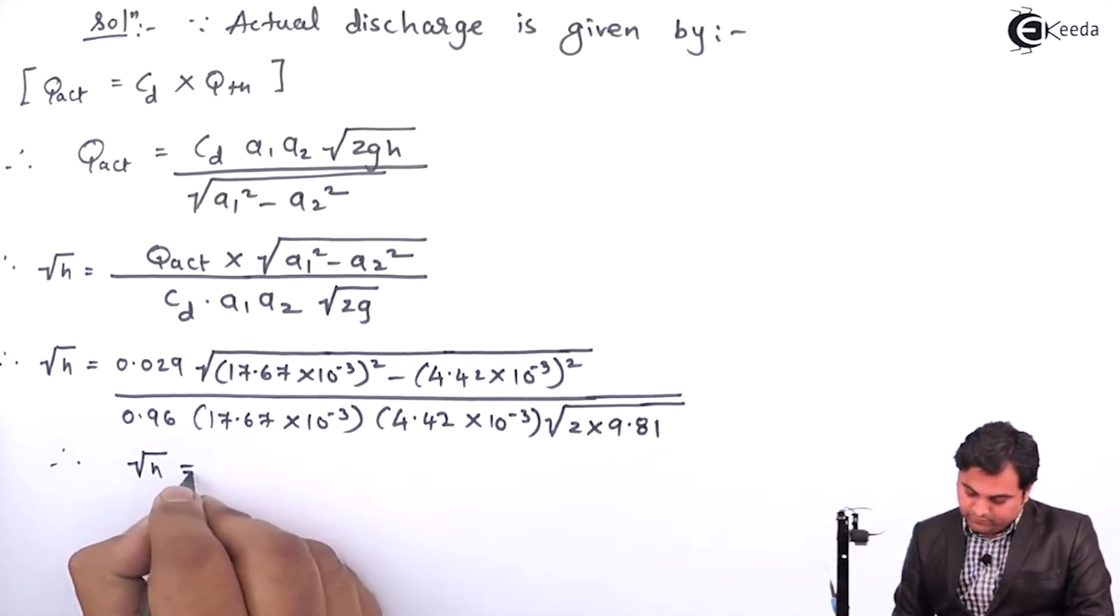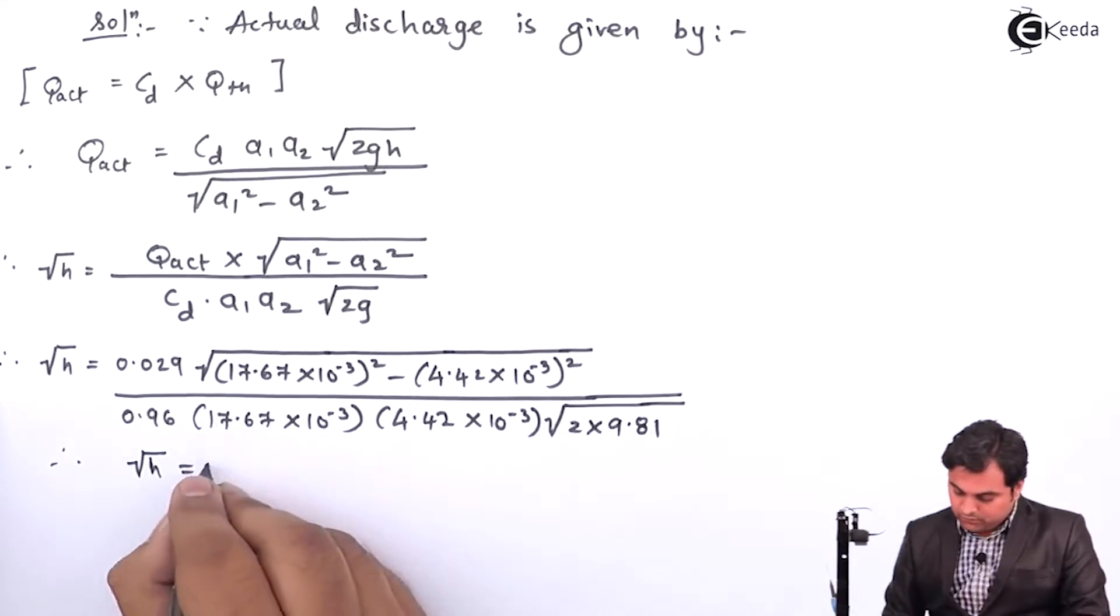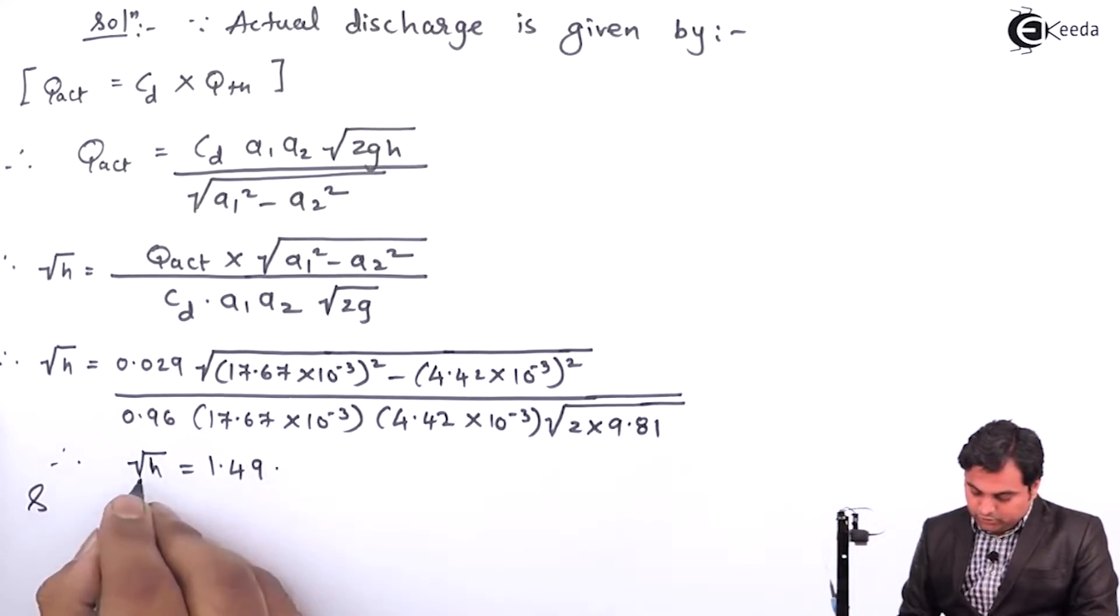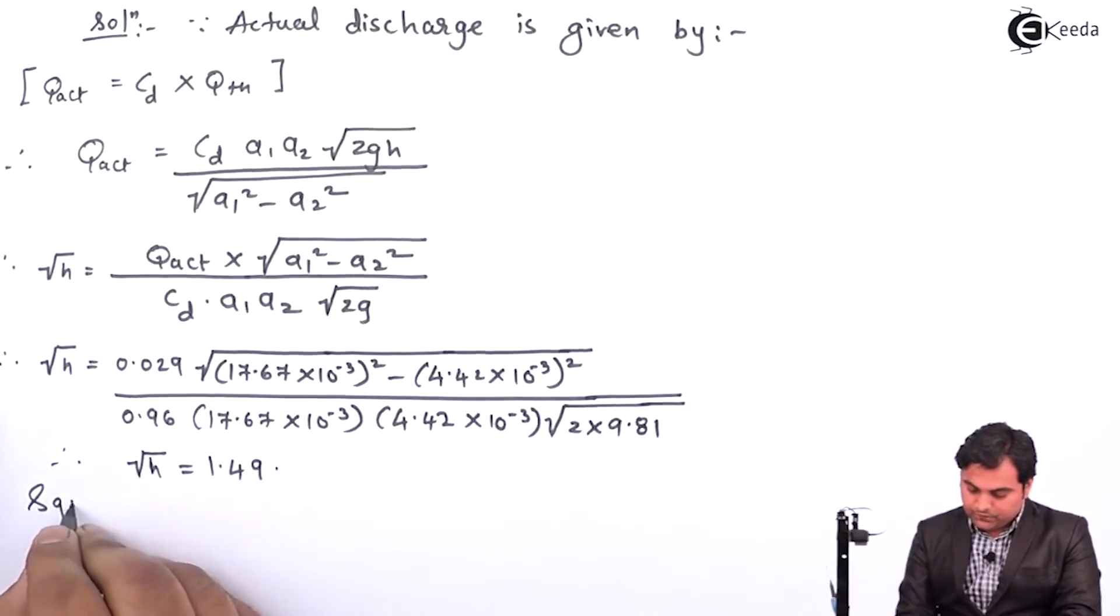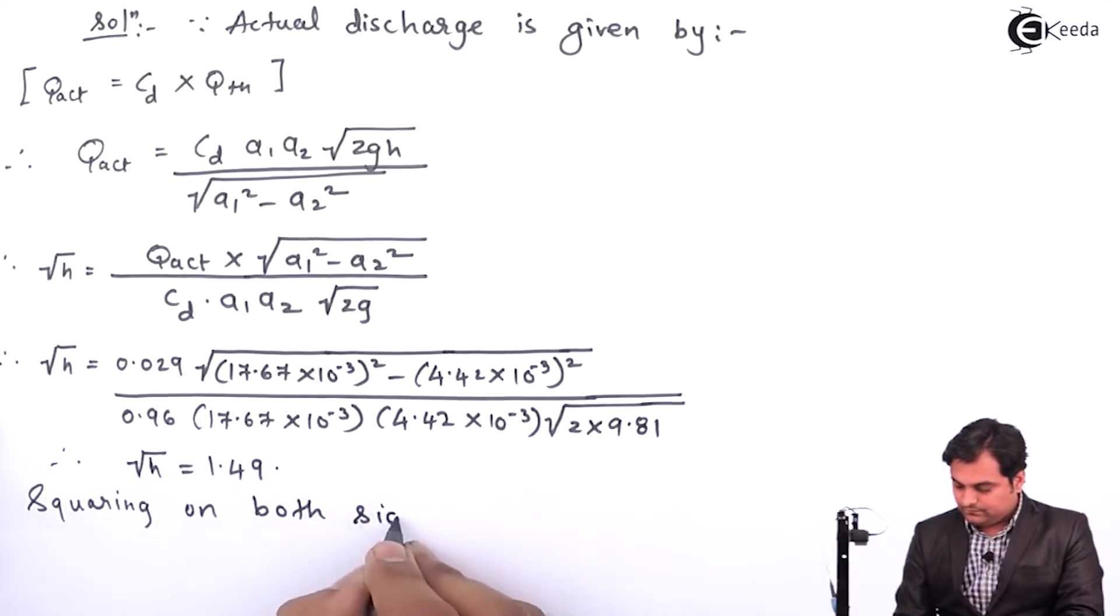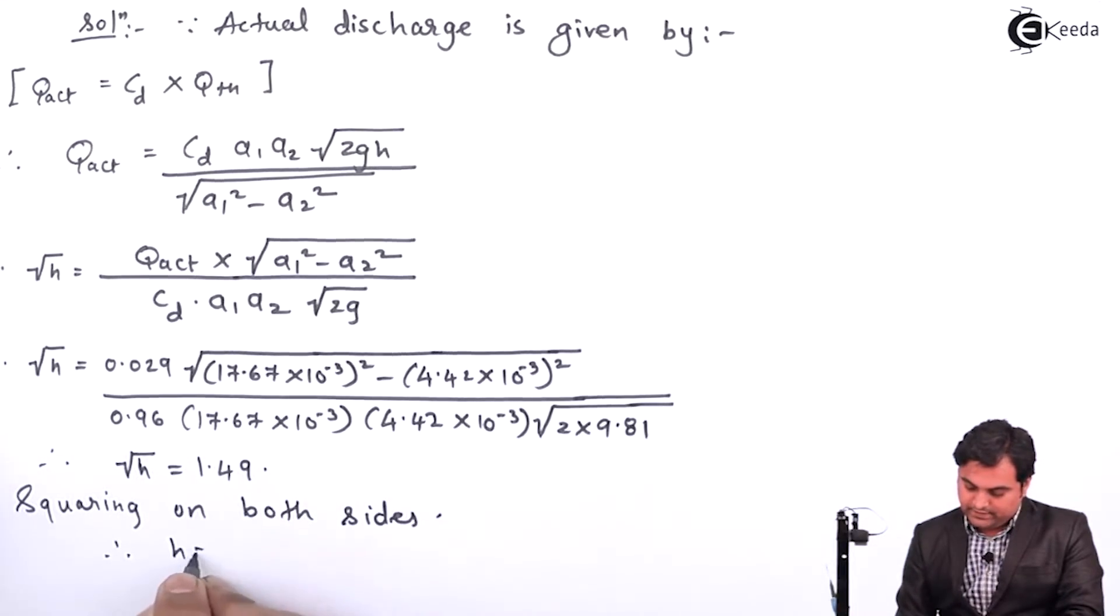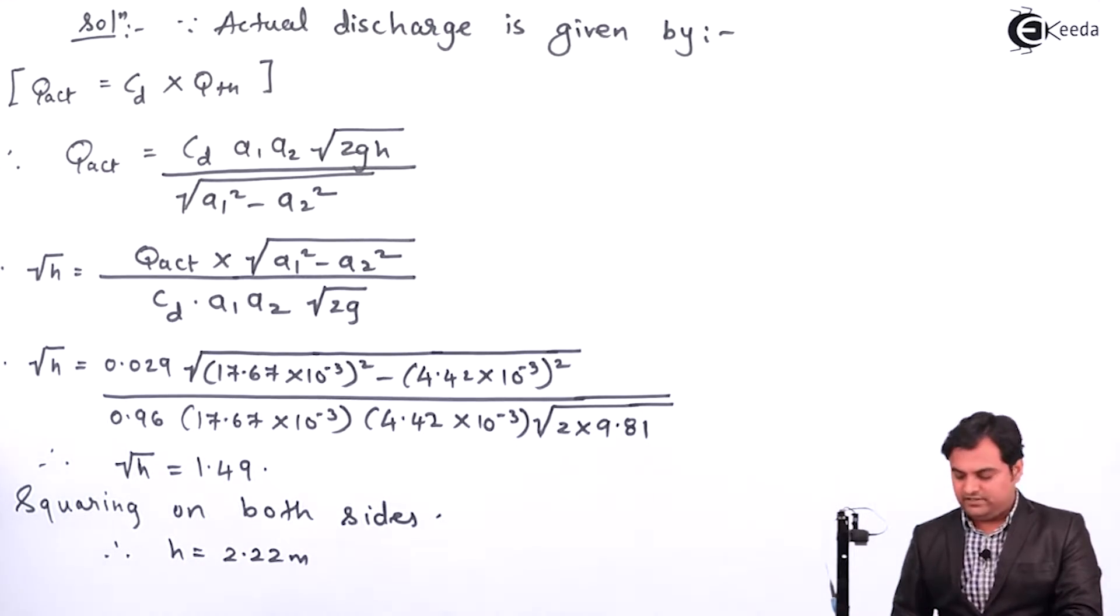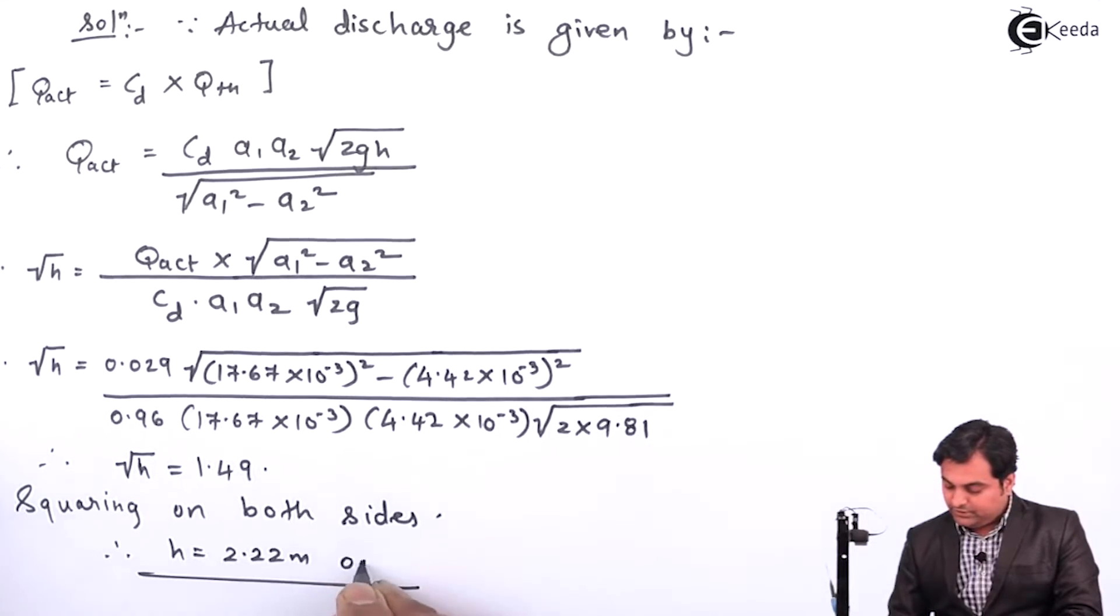From here I will get the answer of root h as 1.49 and then to remove this root, squaring on both sides. Therefore, I will get h as 2.22 meter and it will be in the form of the fluid which is flowing inside the pipe. The fluid which is flowing is petrol, so 2.22 meter of petrol, that is h.